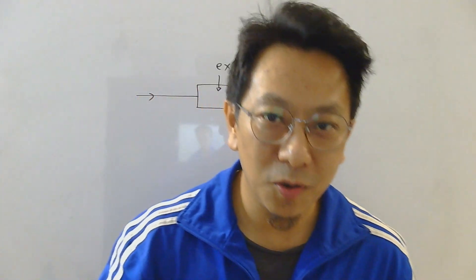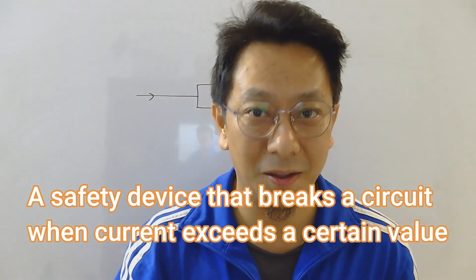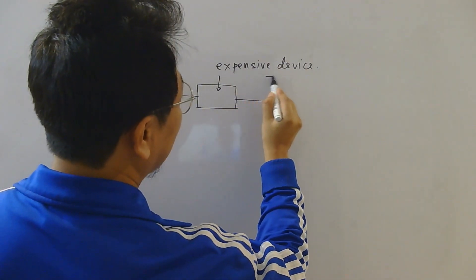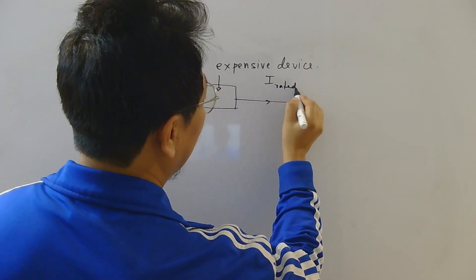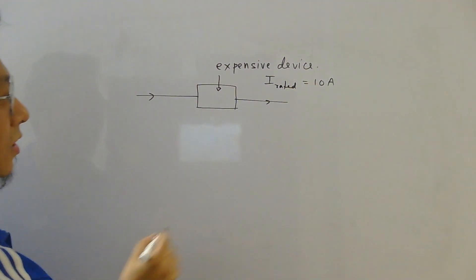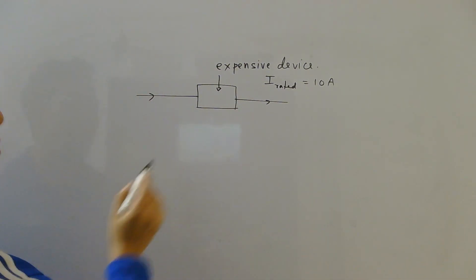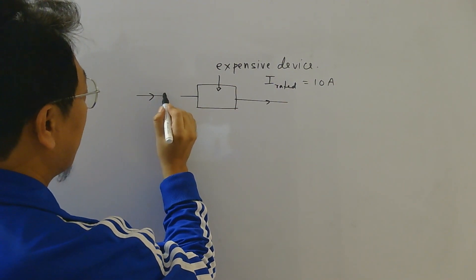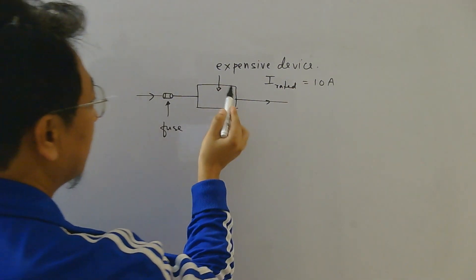Now, what is a fuse? A fuse wire is basically a safety device that breaks an electric circuit when the current becomes too high. So let's say you have an expensive device and the rating of this device — the maximum current that this device can take — let's say the rated current is 10 amperes. So if the current becomes more than 10 amperes, this device will burn. Since this is very expensive, you want to save it. So what we will do is keep a fuse wire in series with the device.